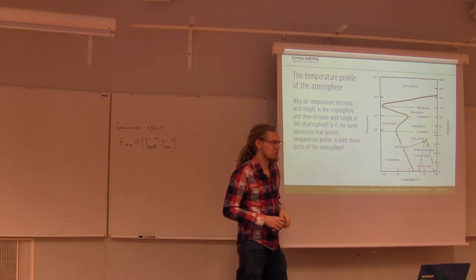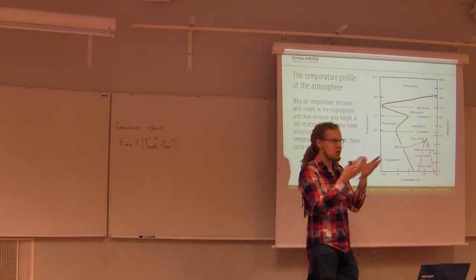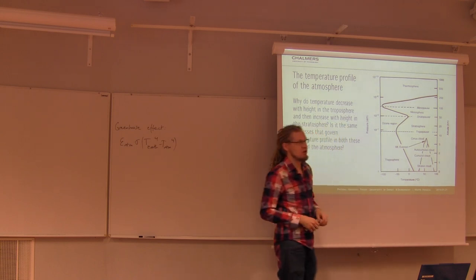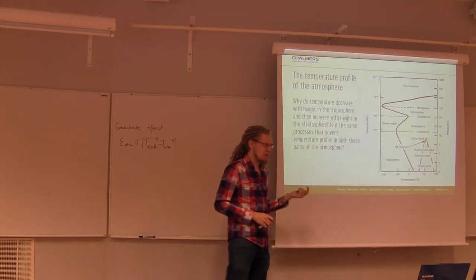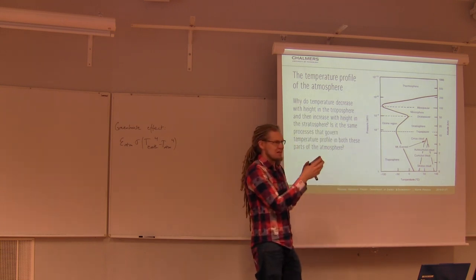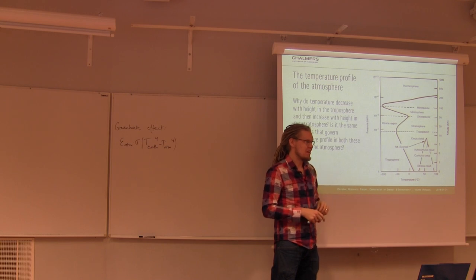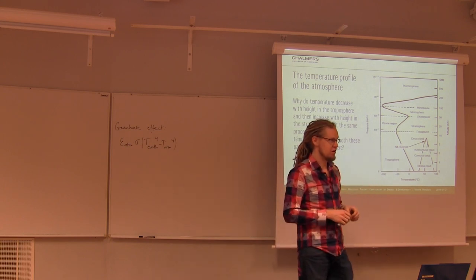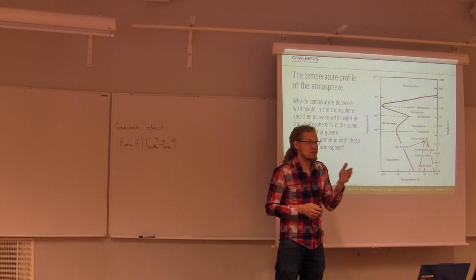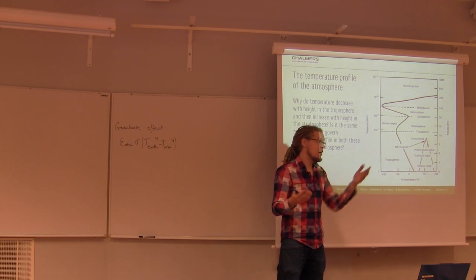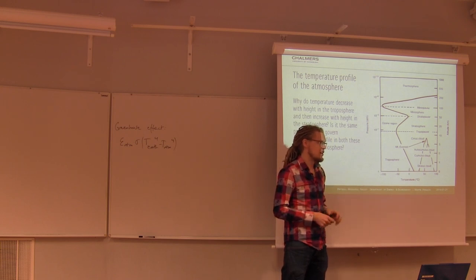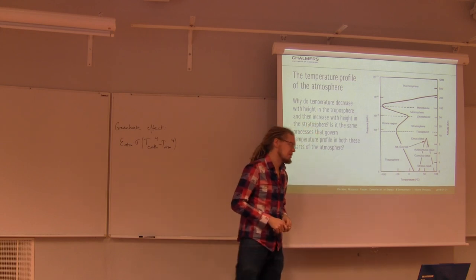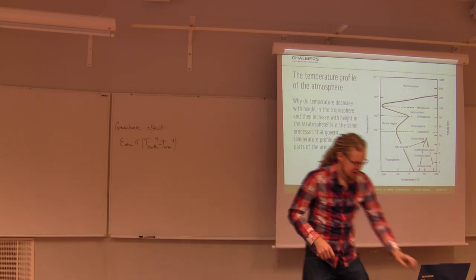Thomas had a question about the temperature in the simple model, where we have one temperature, whereas in reality on Earth you have different temperatures in different parts of the atmosphere. The basic reply is that the temperature used in this very simple model is an average radiation temperature — the effective radiation temperature of the Earth — which is different from the arithmetic average we talk about in daily life. You should really take the average of T to the fourth power, so they differ somewhat.